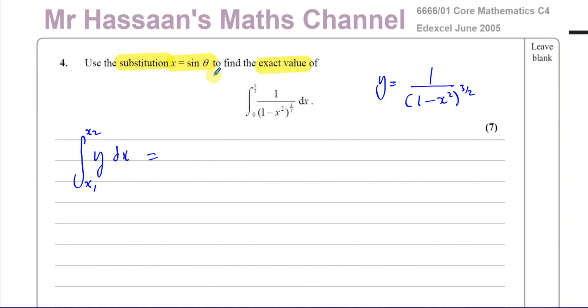But we have to use this substitution involving sine theta. So what we're going to do is we're going to write this as y dx d theta d theta. This is going to make us have to do everything in terms of theta, because we are integrating all of this now with respect to theta. So y has to be expressed in terms of theta, as does dx d theta, as do the limits.